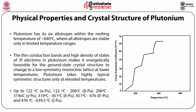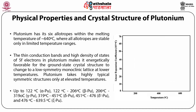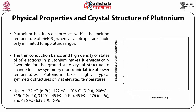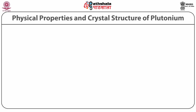From 451 to 476°C, plutonium assumes a body-centered tetragonal lattice structure with 2 atoms per unit cell. Plutonium maintains a BCC structure from 476 to 639.5°C with 2 atoms per unit cell.